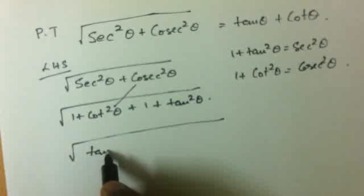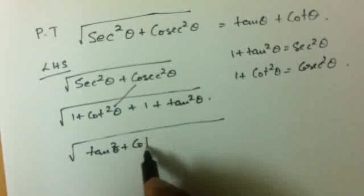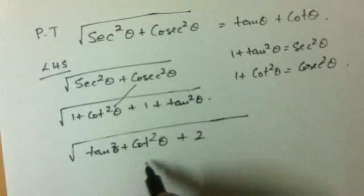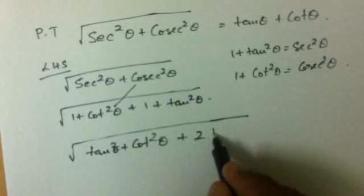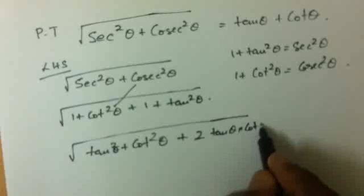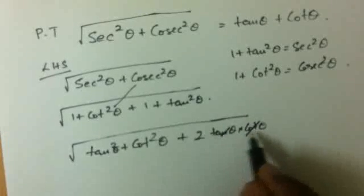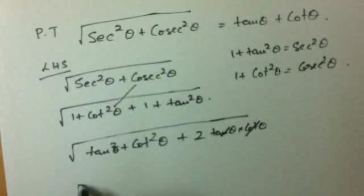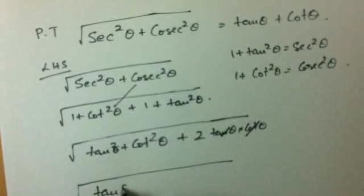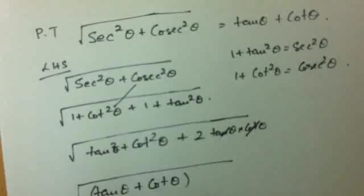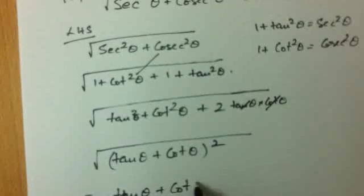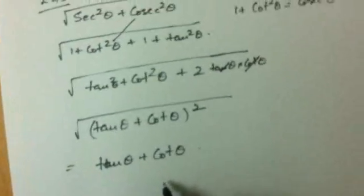We can write this as tan squared theta plus cot squared theta plus 2. This is in the form of a squared plus b squared plus 2ab. So here, tan theta into cot theta would be equal to 1, because cot theta is equal to 1 by tan theta. Then what we have is square root of tan theta plus cot theta, the whole square, which is nothing but tan theta plus cot theta.